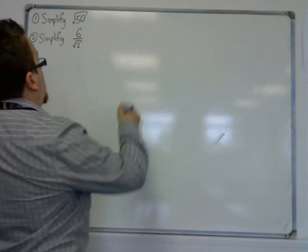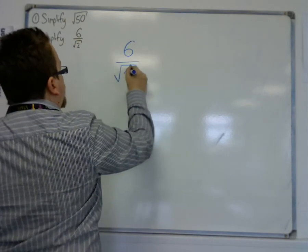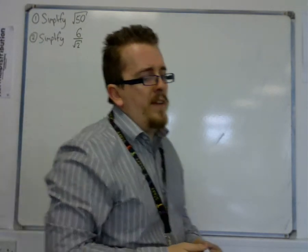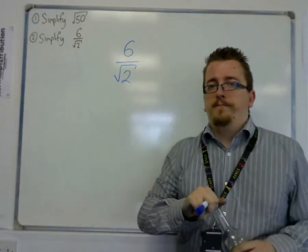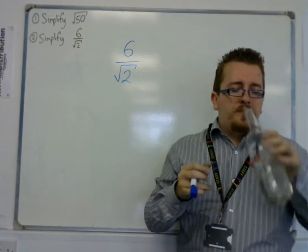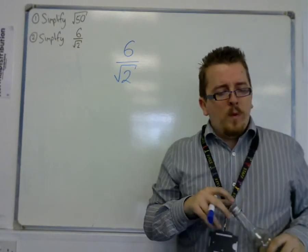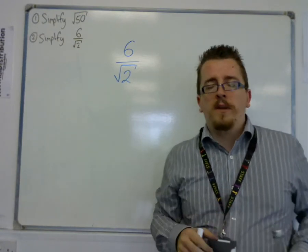In this one, you have 6 over root 2. This requires a little trick known as rationalizing the denominator.